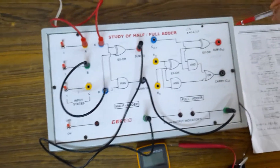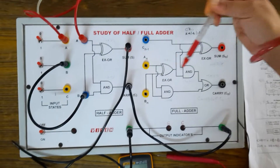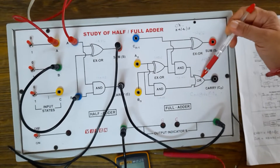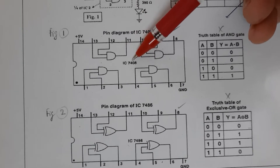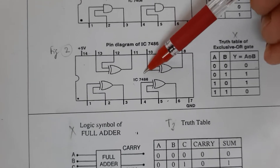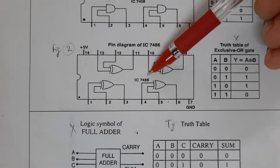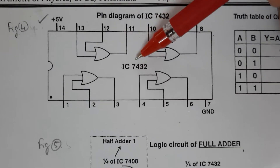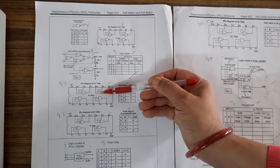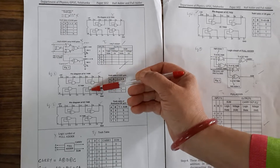The trainer kit consists of AND gates, XOR gates, and OR gates. The AND gate is drawn from IC 7408, XOR gate is drawn from IC 7486, and OR gate is drawn from IC 7432. These 3 ICs are quadruple ICs with 14 pins, in which each IC can provide 4 corresponding gates.